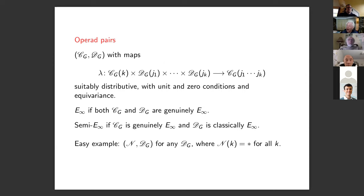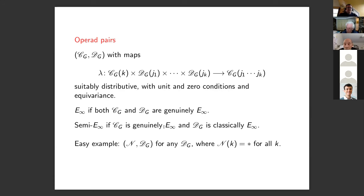Here is a notion that may not be familiar: operad pairs. You have two operads with maps between them — think of an additive operad C encoding addition and a multiplicative operad D encoding multiplication — with suitable distributivity, unit, zero conditions, and equivariance. We say an operad pair is E-infinity if both are genuinely E-infinity, and semi-E-infinity if CG is genuinely E-infinity and DG is classically E-infinity.